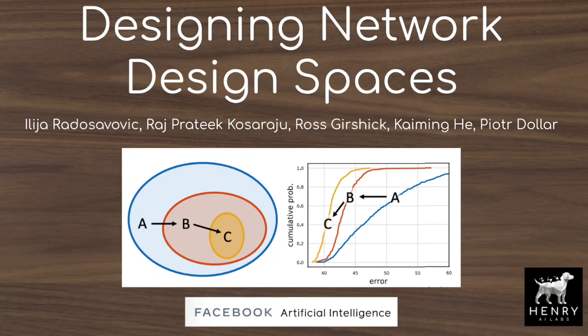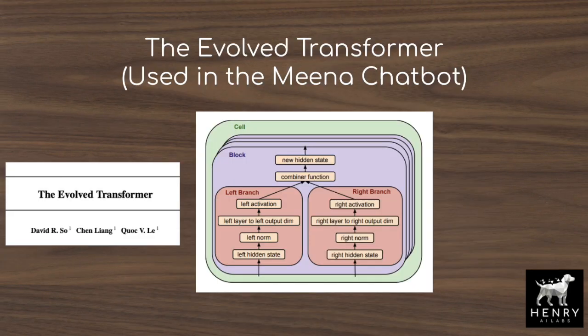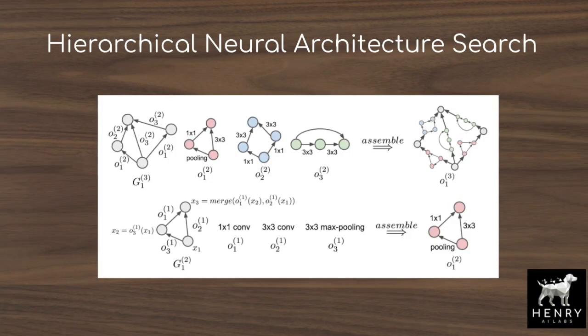This video will explore a really interesting new paper from researchers at Facebook AI: Designing Network Design Spaces. Network Design Spaces refers to the set of all possible neural networks that can be found in something like a neural architecture search.